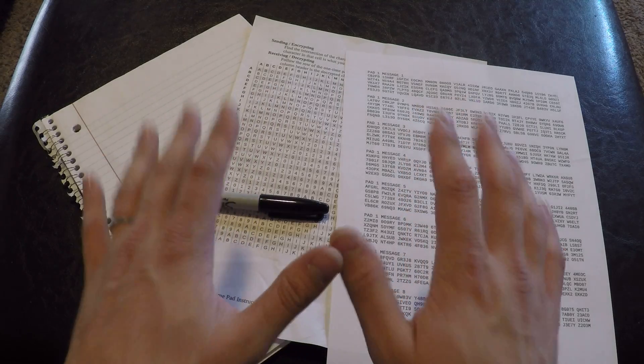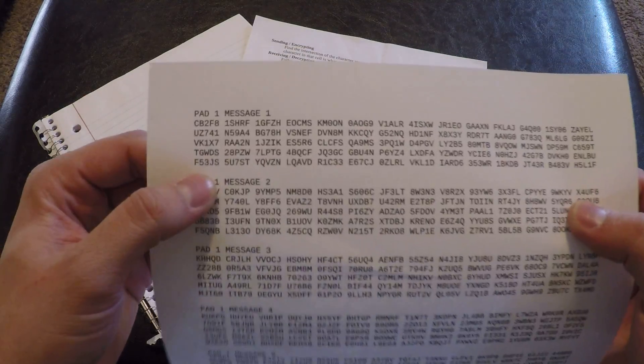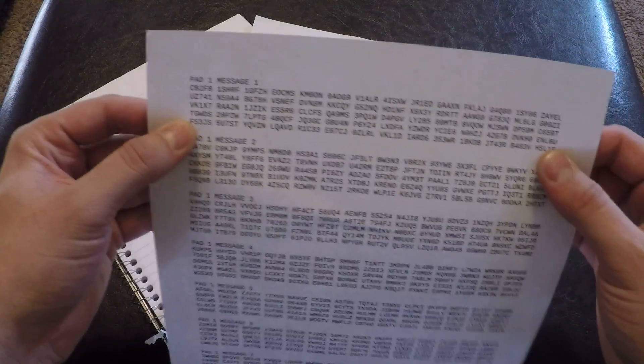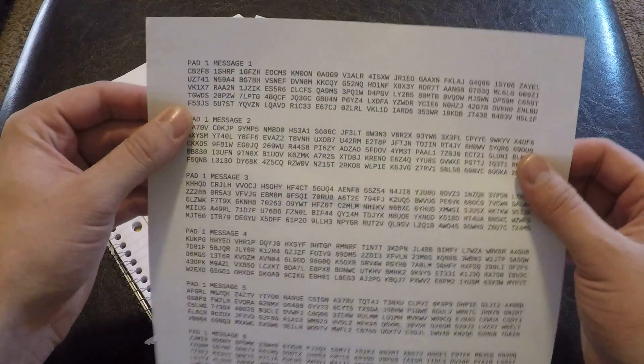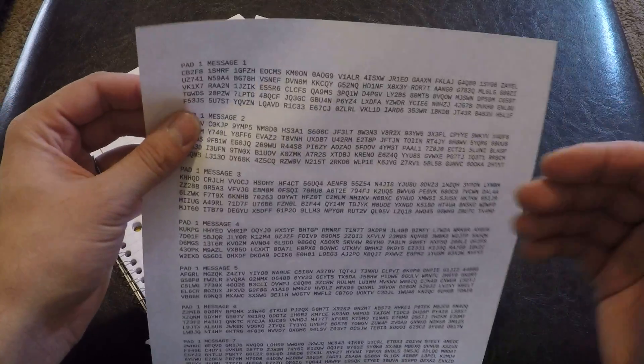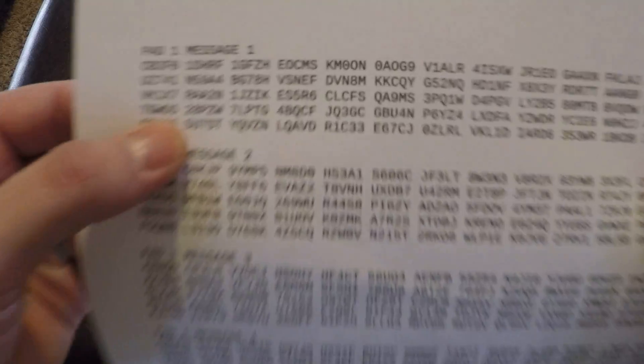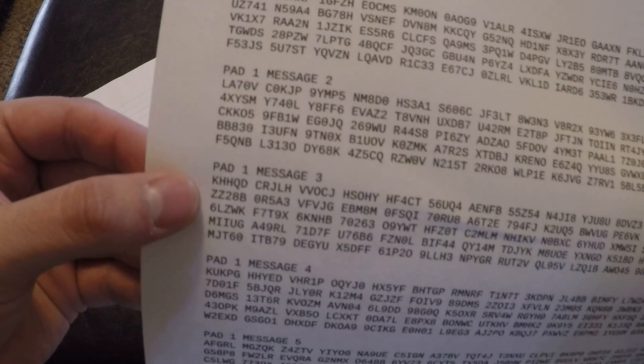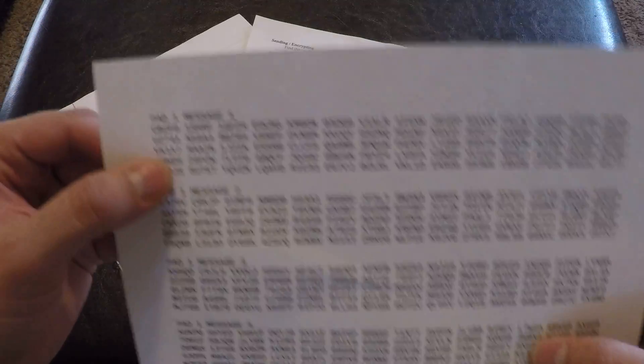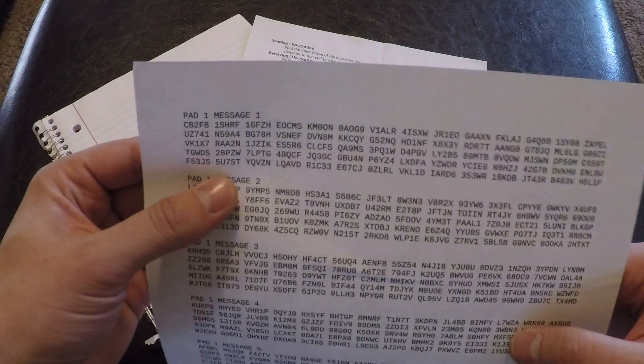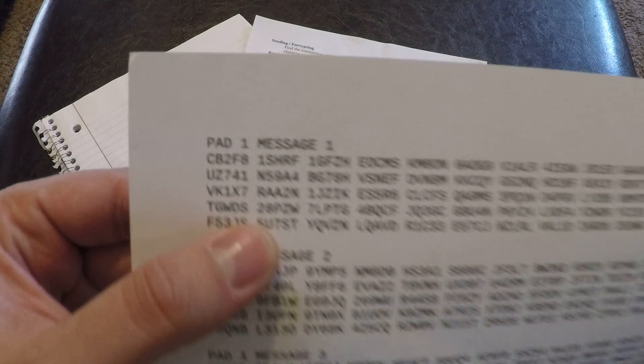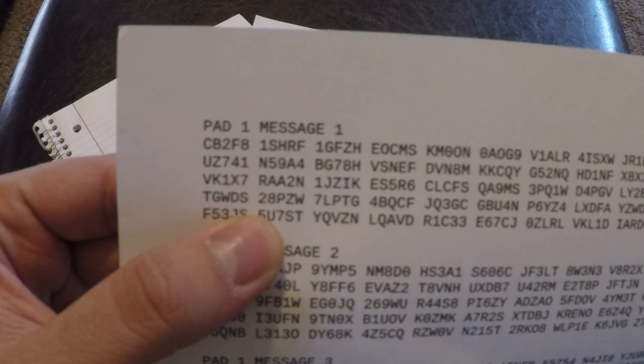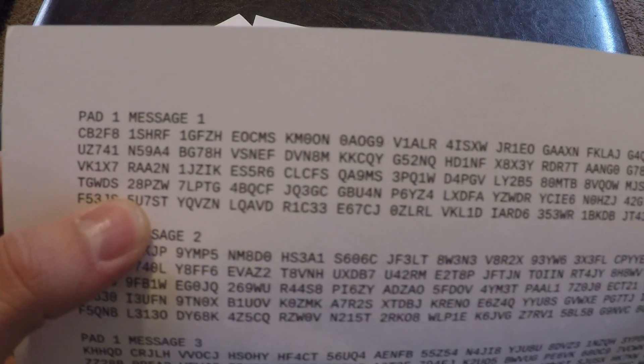So what this method is called is the one-time pad method. And this right here is a one-time pad. So I've just printed this one off as an example. I'll probably do a second video talking about how to generate one of these, but this video will be teaching you how to use it. So on here, I've got several different messages. So this is pad one, message one, and I've got message three, four, five, six, seven. Several different messages. The theory behind this is you use these letters and numbers here.